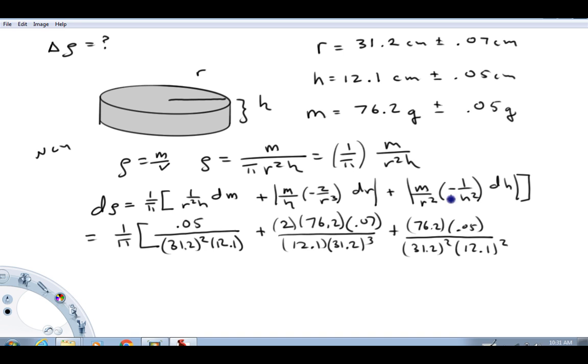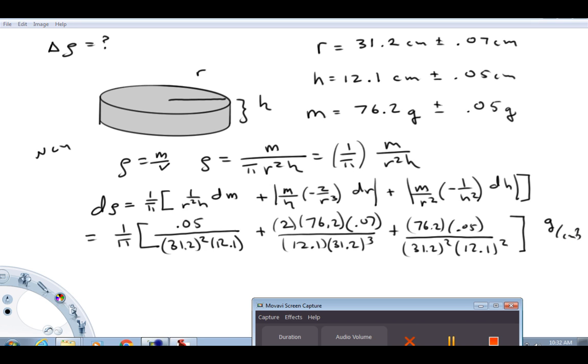And you'll notice, again, I didn't worry about the minus sign. I absolutely valued both these terms because we don't know the plus or minus signs on the dr or the dh anyway. So what I'm doing here is being conservative to calculate the largest possible uncertainty in rho. Now, this is all done units consistent. This should all come out to gram per cubic centimeter. I'm going to take a moment here, pause this, and see if I can get a value out of this.